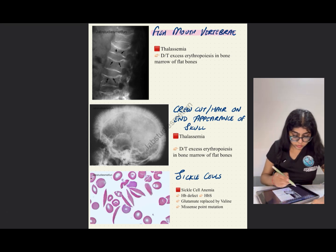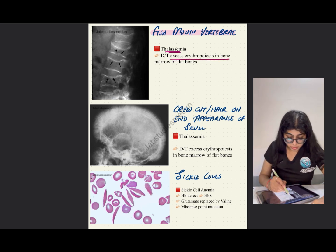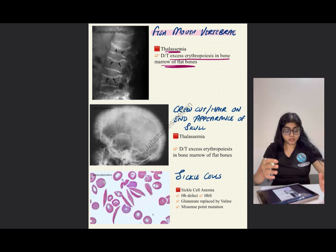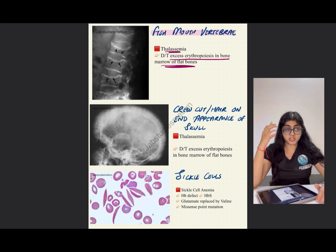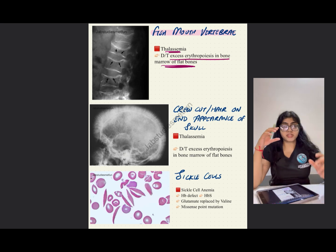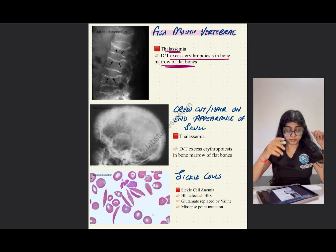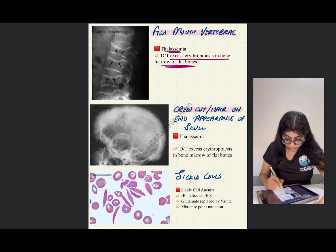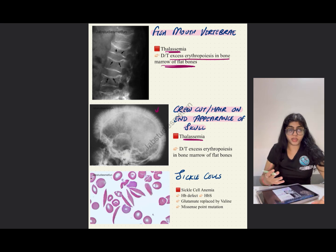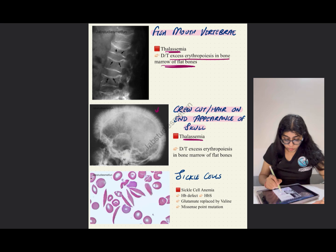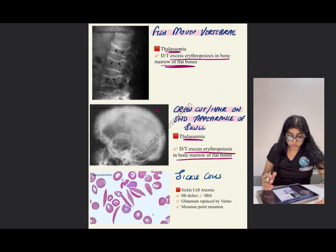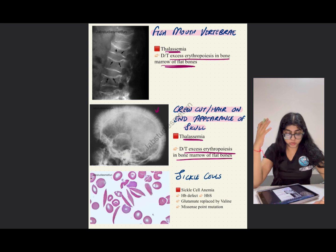Next is fish mouth vertebrae. Fish mouth vertebrae are seen in thalassemia and occur due to excess erythropoiesis in the bone marrow of the flat bones. There is an increased amount of red blood cells produced in flat bones such as vertebrae, and the vertebrae start looking like a fish mouth on X-ray. Similarly, crew-cut or hair-on-end appearance of the skull is also seen in thalassemia — the skull bone looks like it was given a crew cut, also due to excess erythropoiesis in the flat bones, since the skull is also a flat bone.